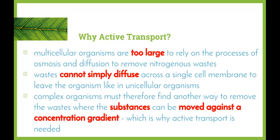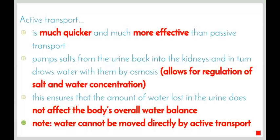Active transport is much quicker and much more effective than passive transport. It is able to pump salts from the urine back into the kidneys and in turn draw water with them by osmosis, allowing for the regulation of salt and water concentration. This depends on feedback from the body based on hormones, which we'll look at in the next couple of lessons. The body will draw salt and/or water back in depending on what's needed, ensuring that the amount of water lost in the urine does not affect the body's overall water balance.